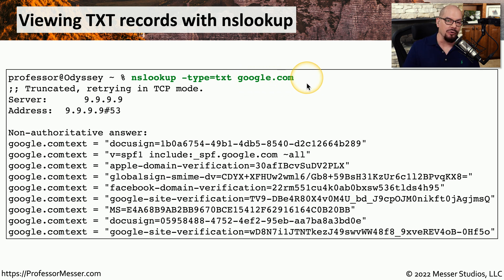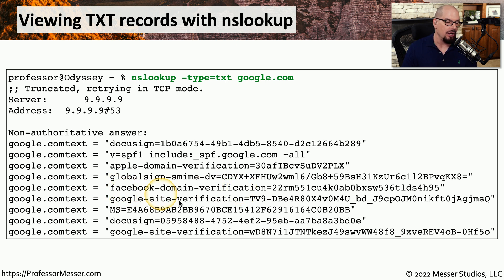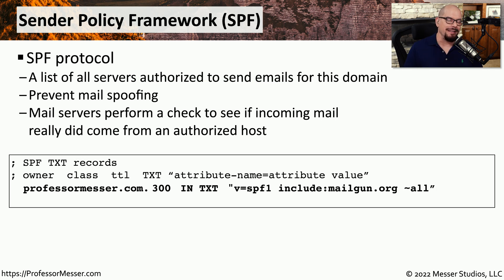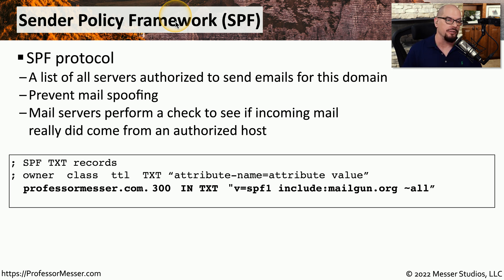You can see when you perform a google.com lookup that Google has a number of text records, which include things like a Facebook domain verification, a Google site verification, and a DocuSign text record. A common text record you might find is an SPF record, or a sender policy framework. This is a list of all of the email servers that are authorized to send messages using your fully qualified domain name.